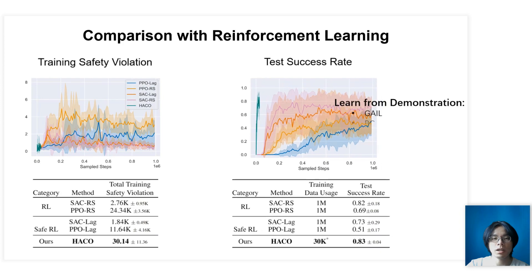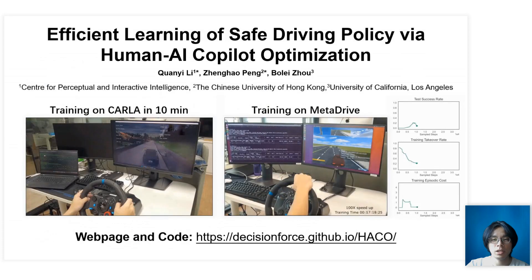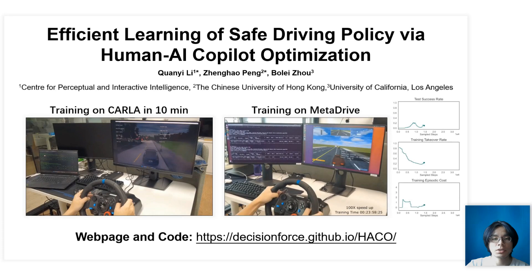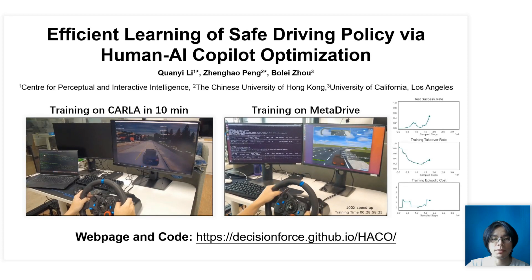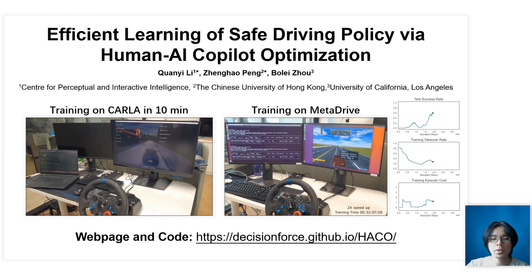We also compare HACO with imitation learning, offline RL baselines, and other human-in-the-loop baselines — please refer to our paper for details. Besides MetaDrive, we also train HACO on the CARLA simulator, where HACO learns to extract visual features and learn to drive in merely 10 minutes. All videos and the paper can be found on our webpage. Hope you enjoy this work. Thanks!